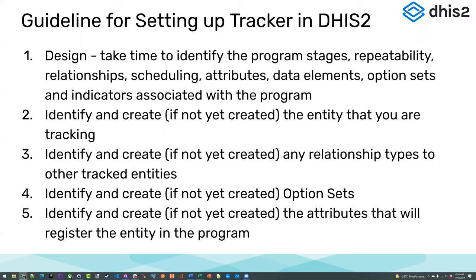The first thing we're going to look at is the tracked entity type. We mentioned this in the data model the other day. The tracked entity type can be something like a person or a patient, or something else theoretically. In our example, we're going to focus on a person or patient. We're going to show you where that is and how to create one if you need to, and then identify and create any relationship types.